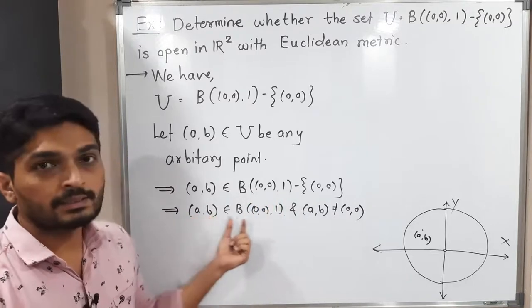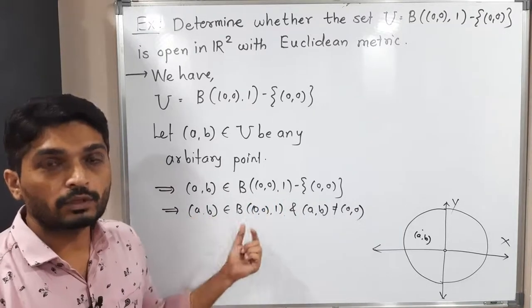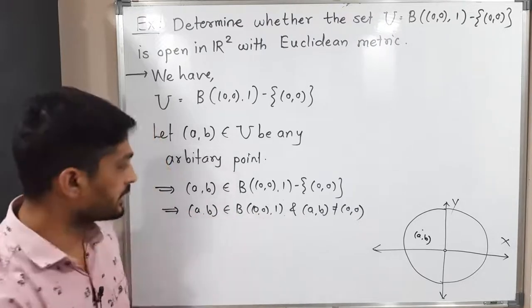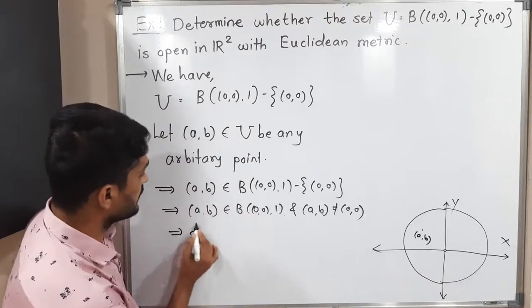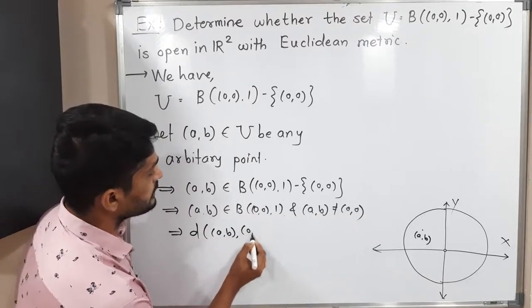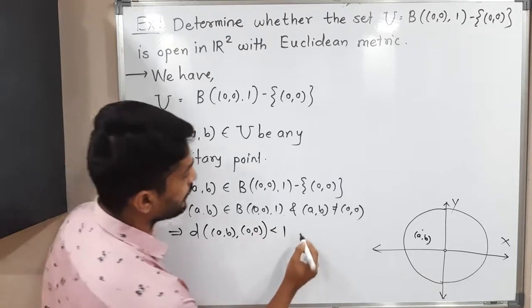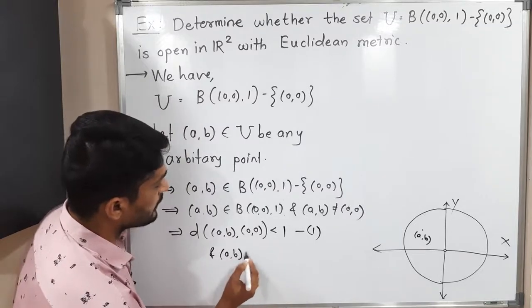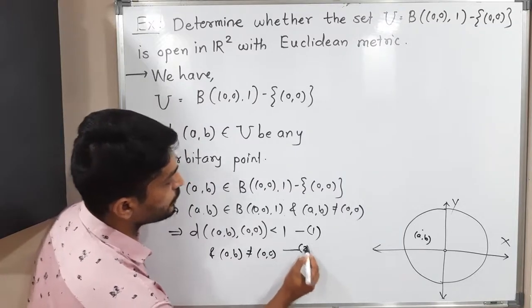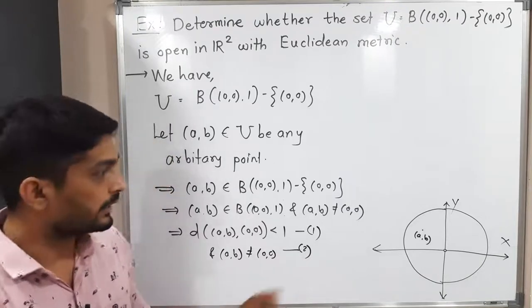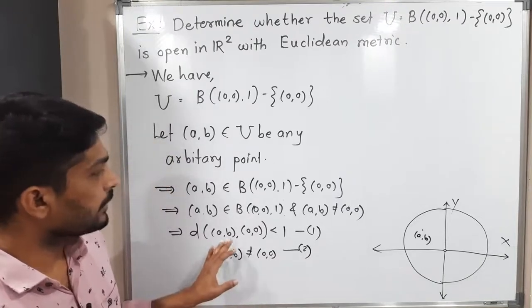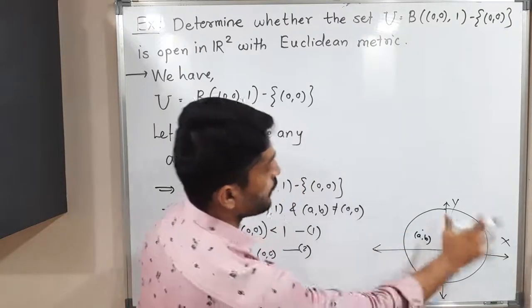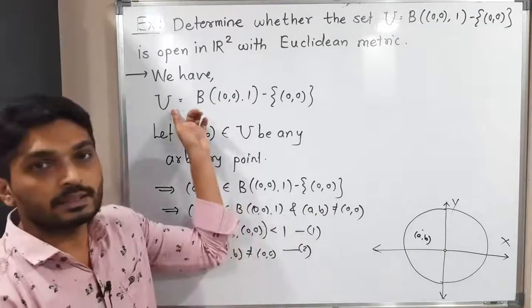When any point lies in a ball, the distance of that point from the center of the ball is less than its radius. So this implies the distance of (A, B) from (0,0) is less than 1. This is a very important thing we have got — I am calling it equation 1. And the second important thing is (A, B) is not equal to (0,0). This is also important — calling it equation 2.